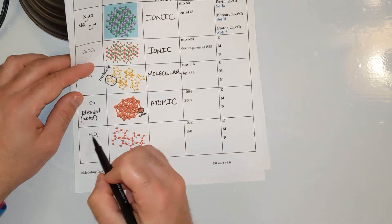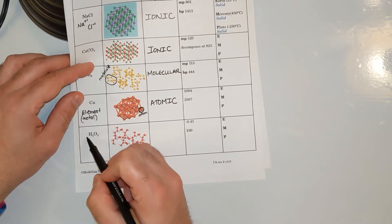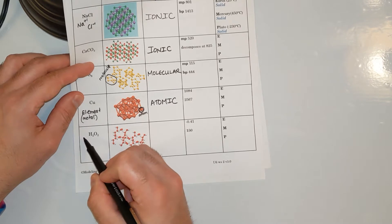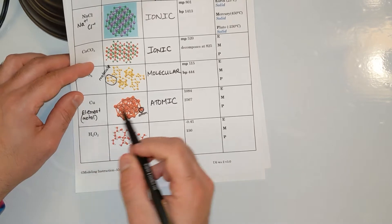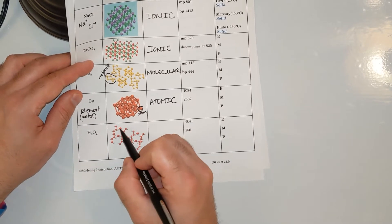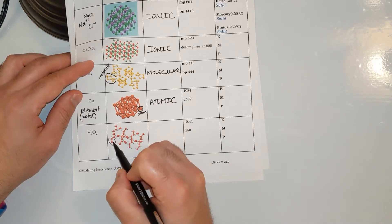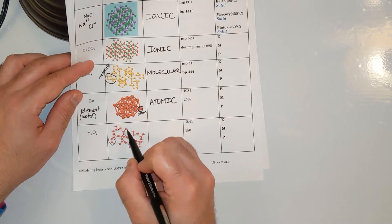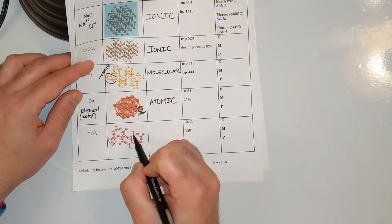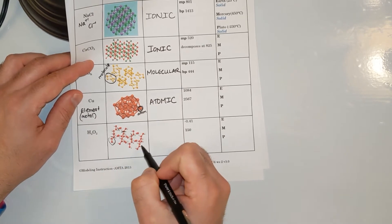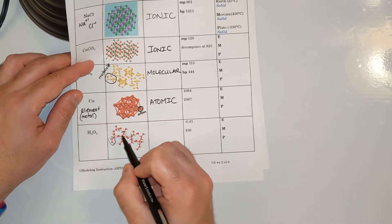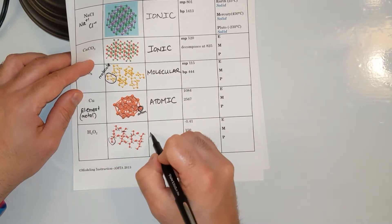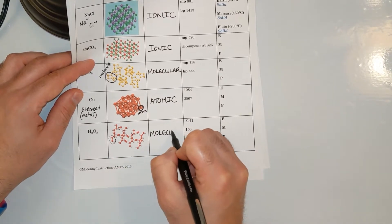Next one, we got H2O2. We got two nonmetals, which makes that a molecular compound — this is hydrogen peroxide. The smallest particle is a molecule, and none of these are touching at all. So more than one color, not touching at all: molecular.